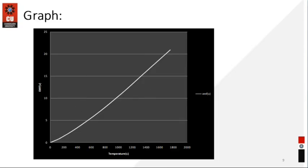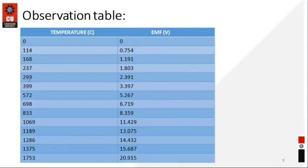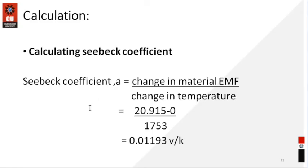You can see how to find the slope of the graph of this line. The formula is y2 minus y1 upon x2 minus x1. Here y2 and y1 are for the temperature and x1, x2 are for the EMF. y1 is 572 — you can see on the observation table — and the same reading for the EMF is x1. After that y2 is 833 and x2 is 8.359. From the calculation part you can find the slope of the graph.